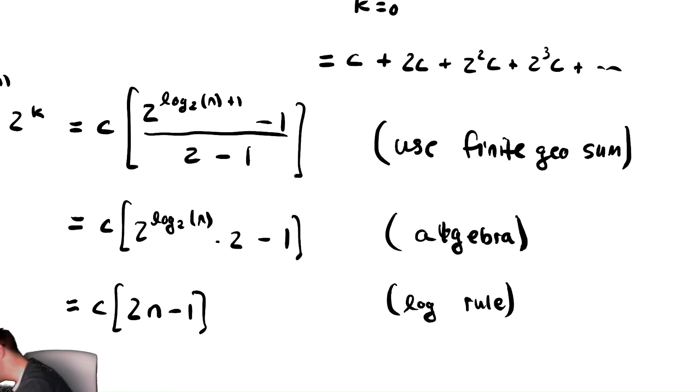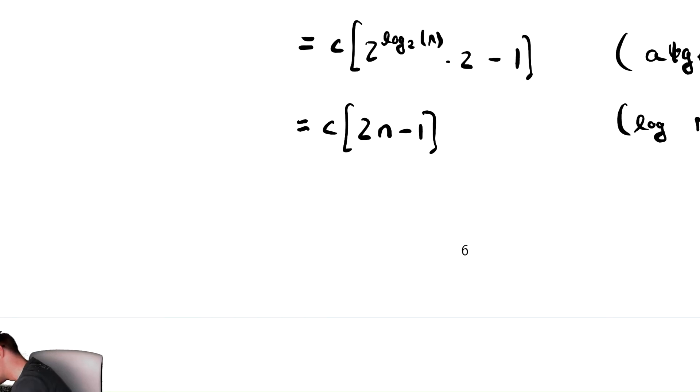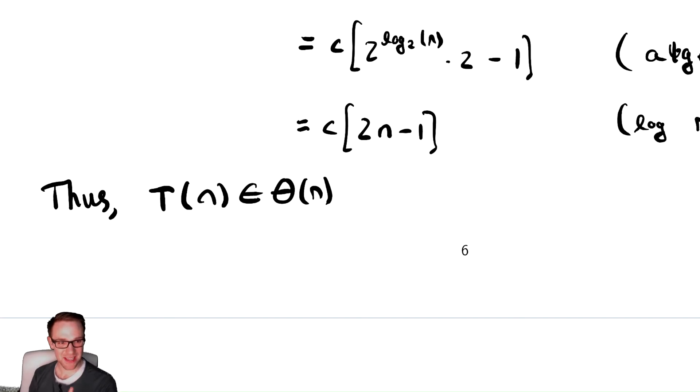So thus, t of n is in theta of n, which I claim is really weird. Let's try to find out why that's really weird.